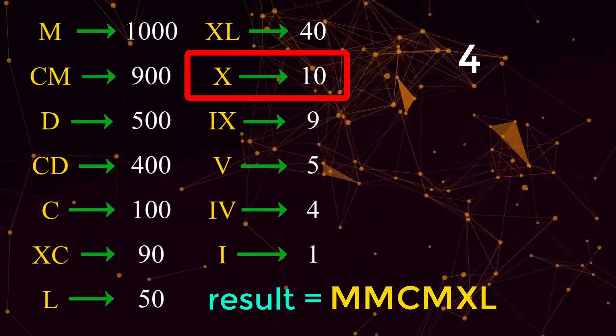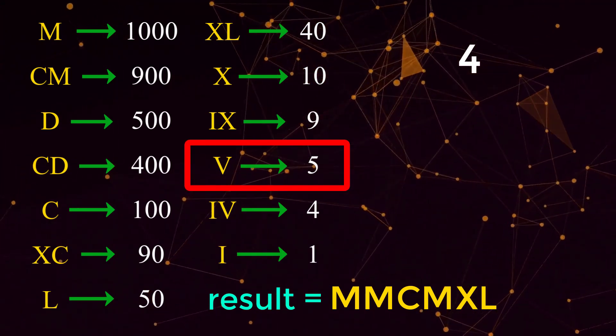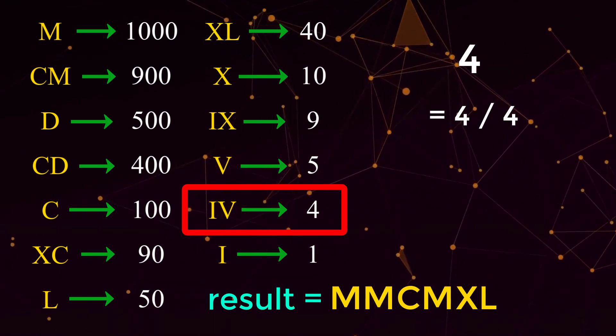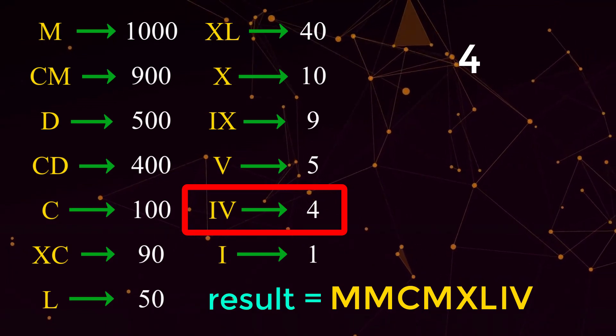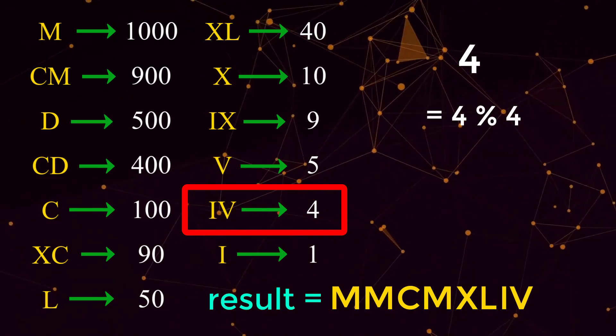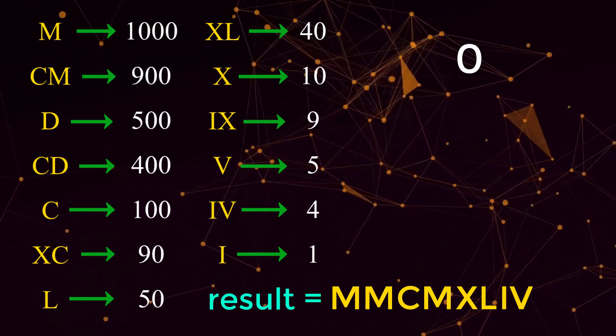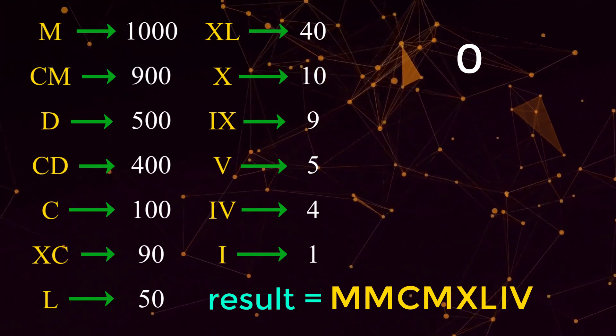We move through all of our numerals until we get a division that is not 0. And that would be at the numeral IV which is equal to 4. We do 4 divided by 4 which is equal to 1, so we append a single IV to our result. Finally we do 4 mod 4 which is equal to 0. And when our number reaches 0 we know we are done with the conversion. So our final result is MMCMXLIV.